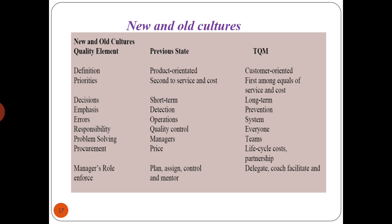This is a table indicating new and old cultures. The quality elements compared are: definition — previously product-oriented, now customer-oriented under TQM; priorities — previously second to service and cost, now first among equals with service and cost; decisions — previously short-term, now long-term; emphasis — previously detection, now prevention; errors — previously an operations responsibility, now a system responsibility; quality — previously the responsibility of quality control, now everyone's responsibility; problem solving — previously done by managers, now done by teams.